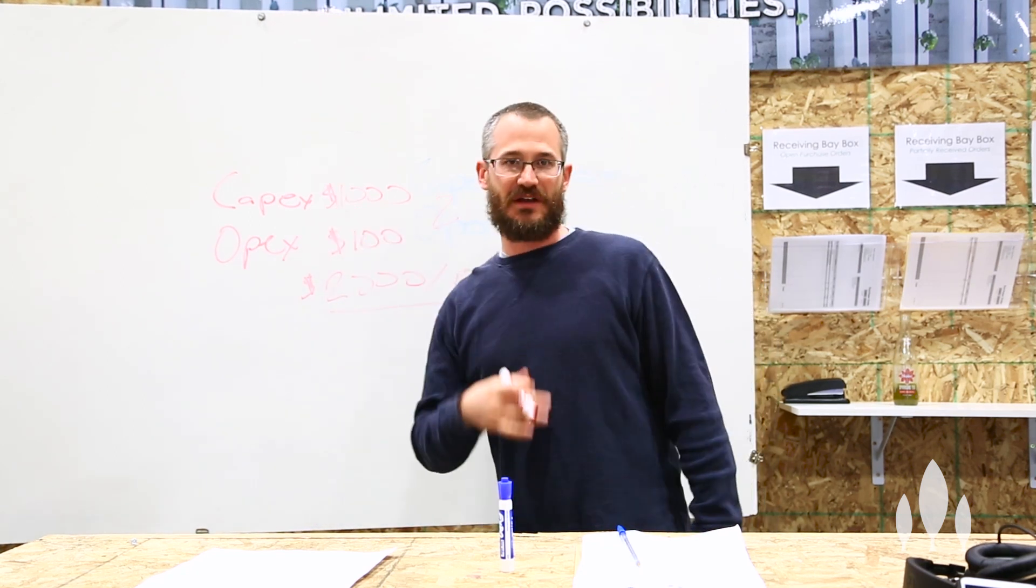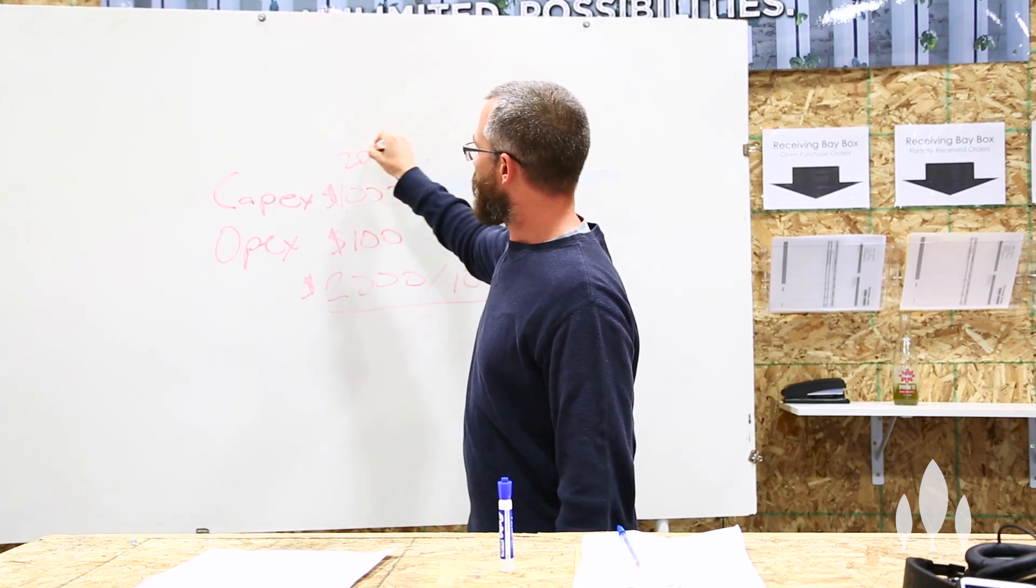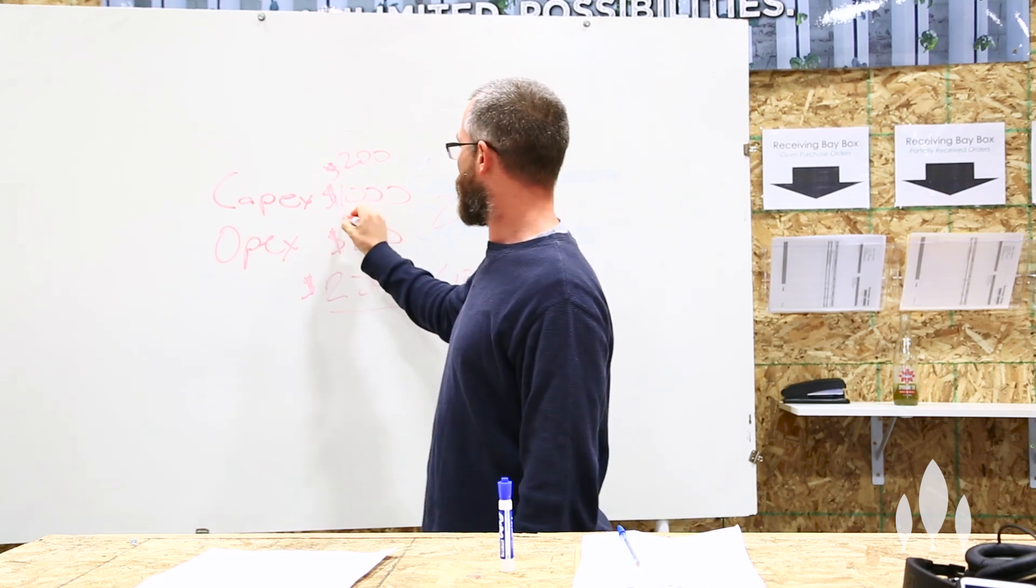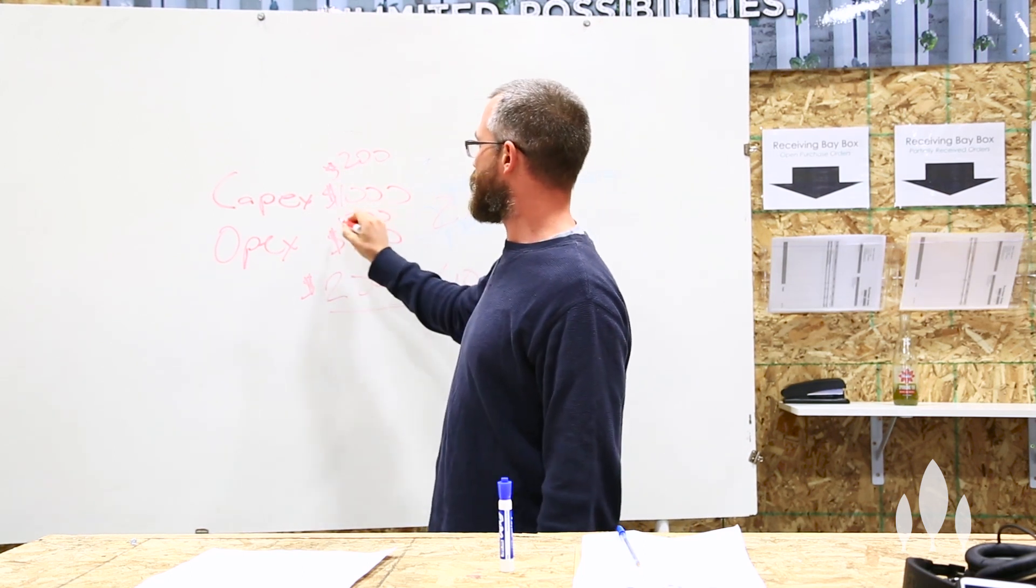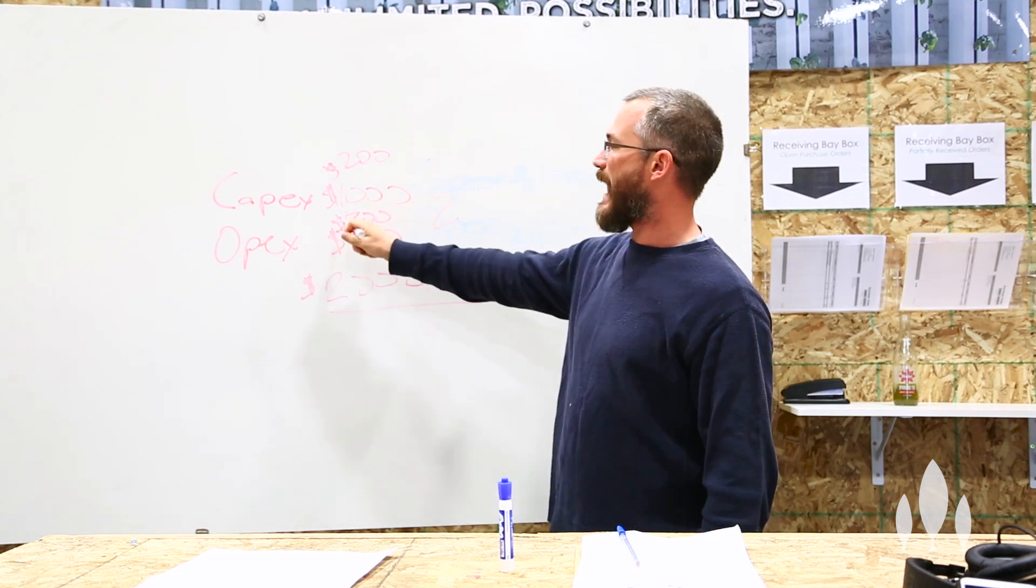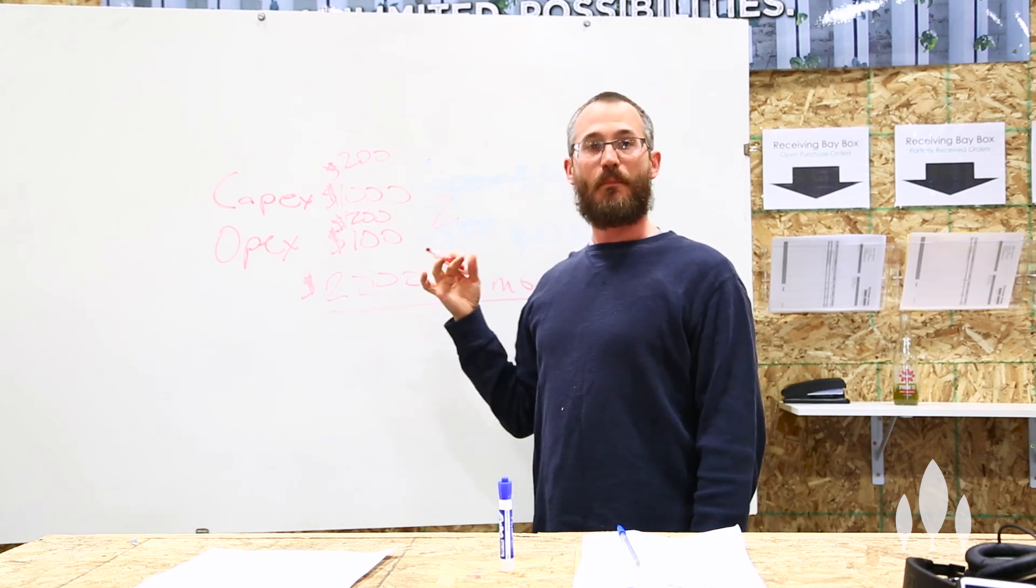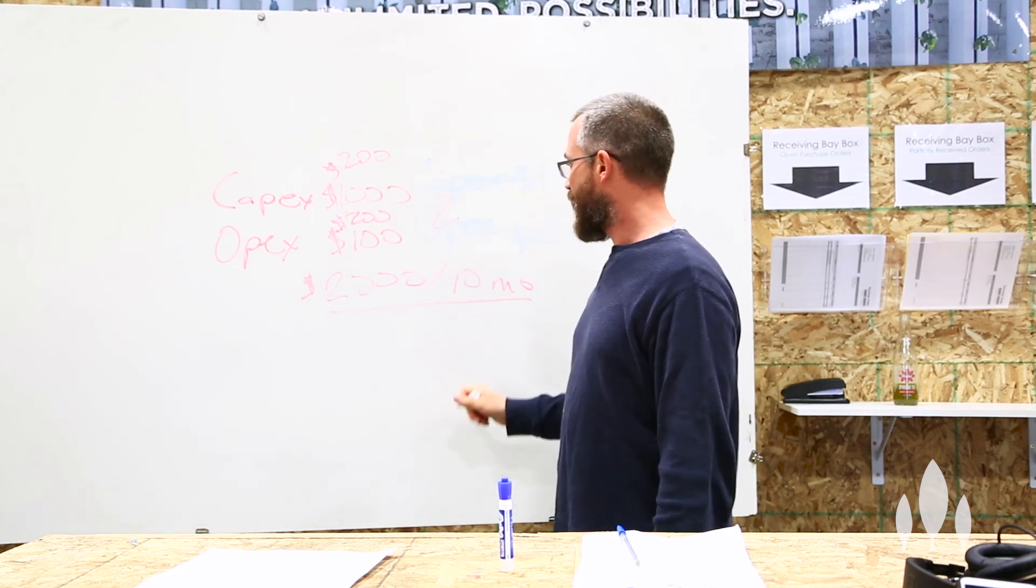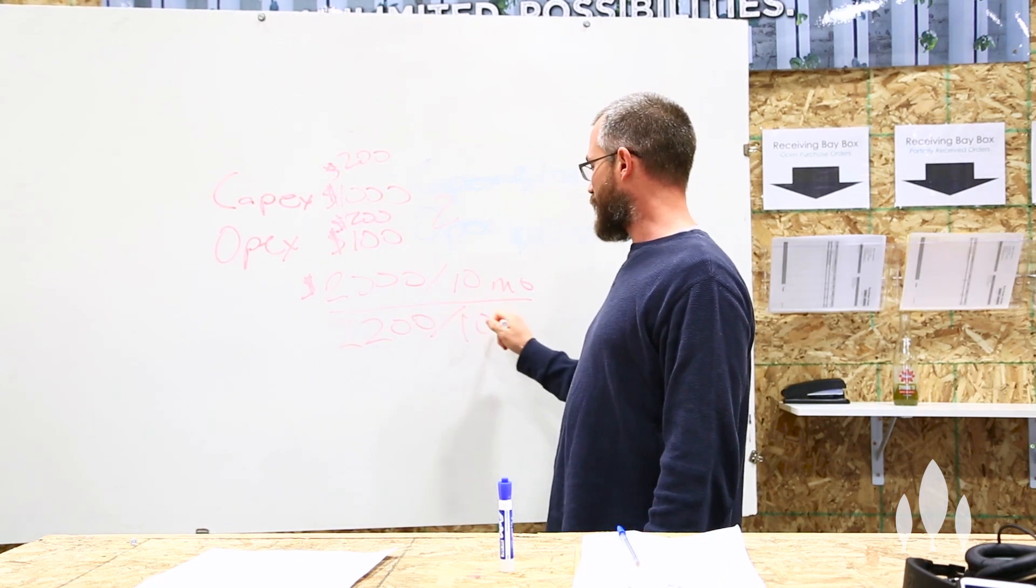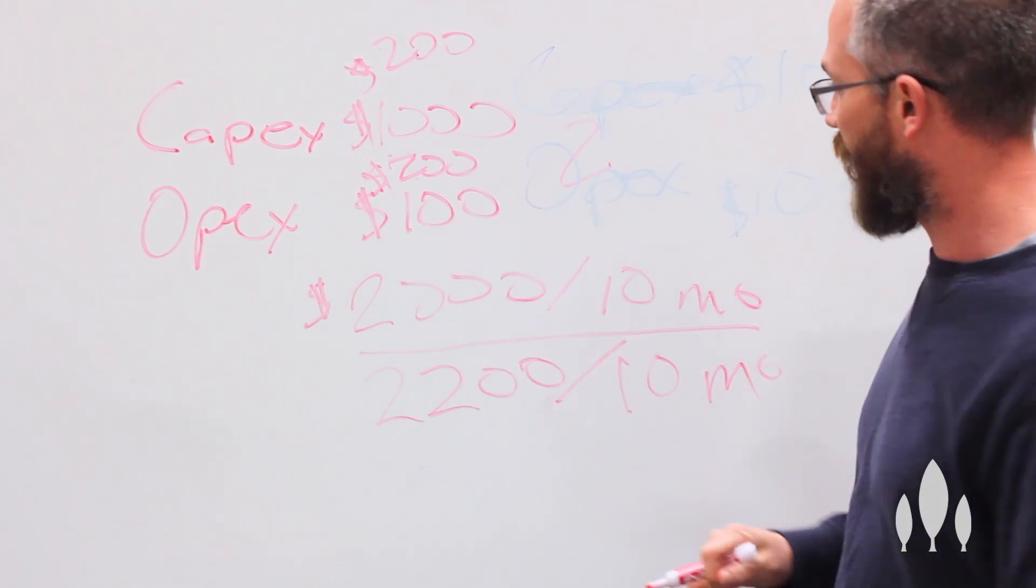Now if we're talking about a capex for traditional HID lighting it might be closer to two hundred bucks, but the opex is two hundred a month because we use twice as much electricity at least. So after ten months we have 200 times 10, that's two thousand plus another two hundred bucks worth of capex, and we end up with 2200. For the first ten months, right?